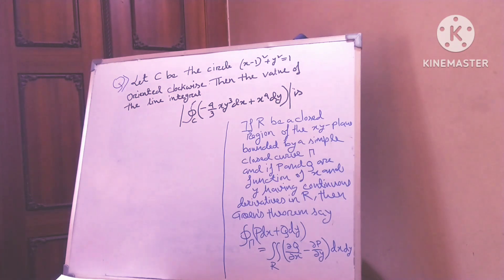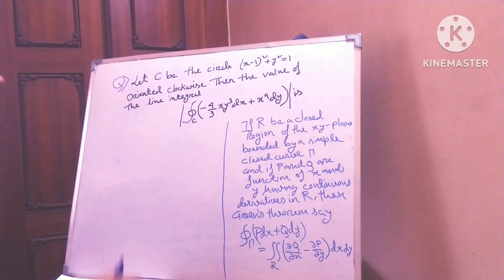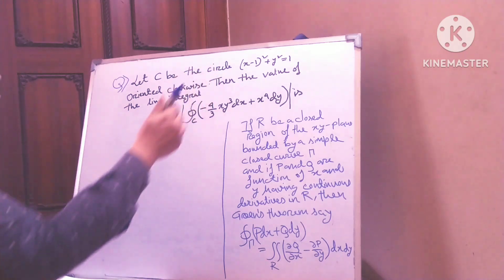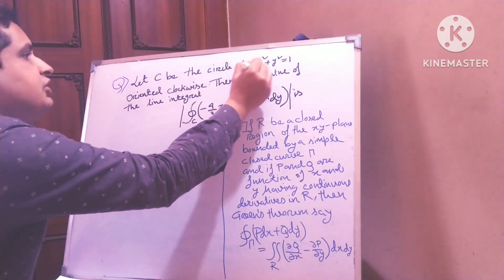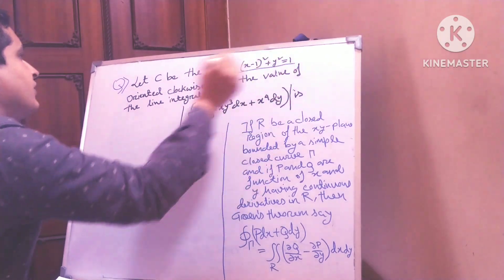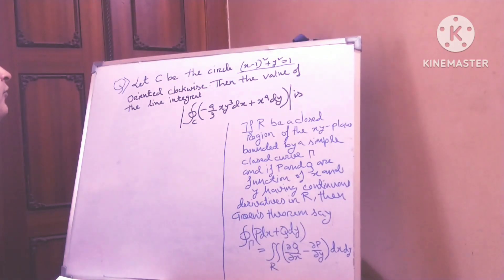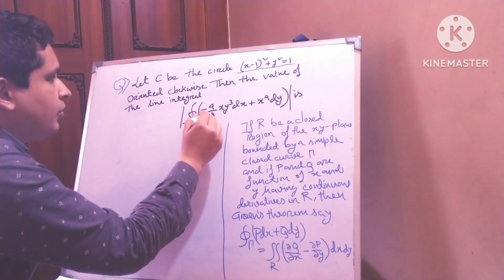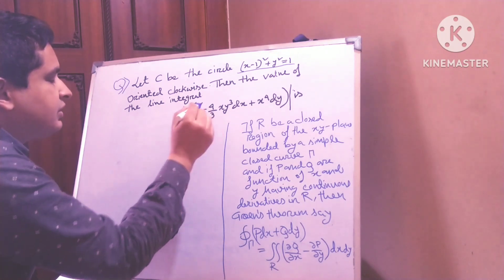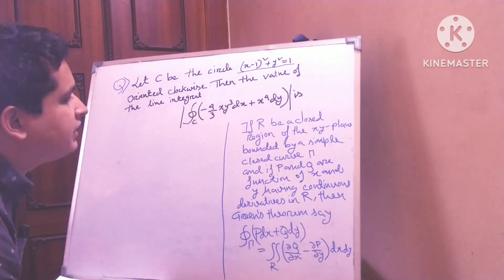So let C be the circle (x minus 1) squared plus y squared. This is my radius. Oriented clockwise, then the value of the line integral along C equals the integral of (4/3 x y) whole cube plus x to the power 4, dy.